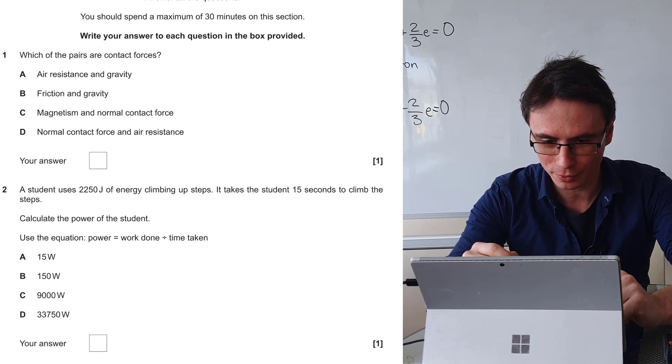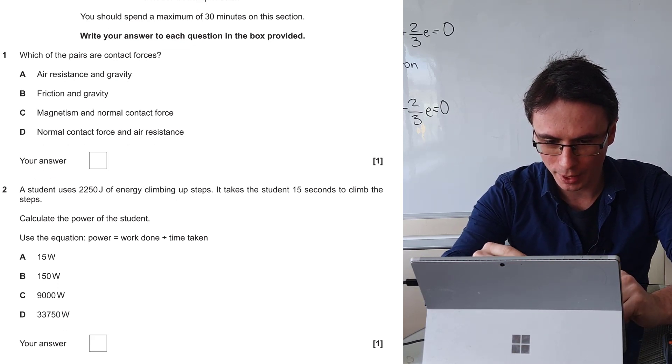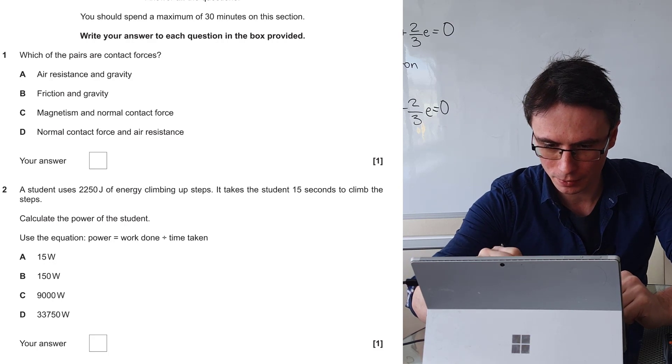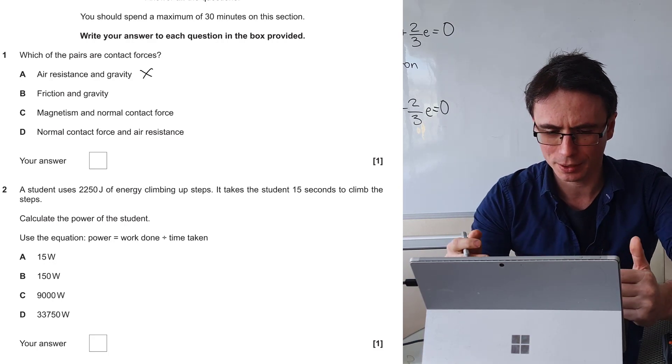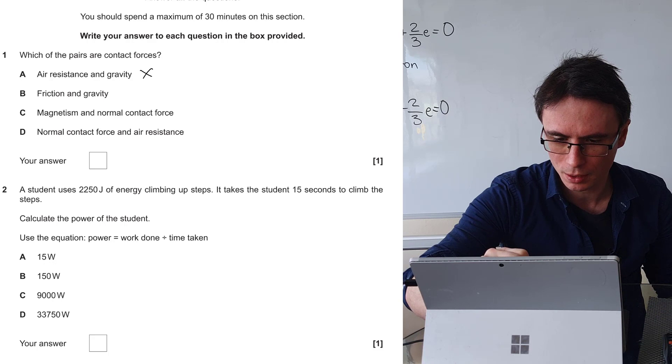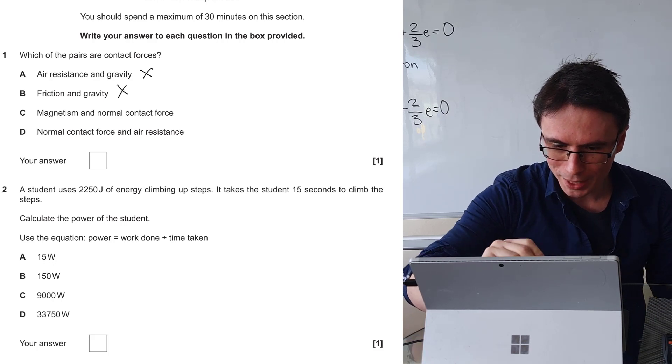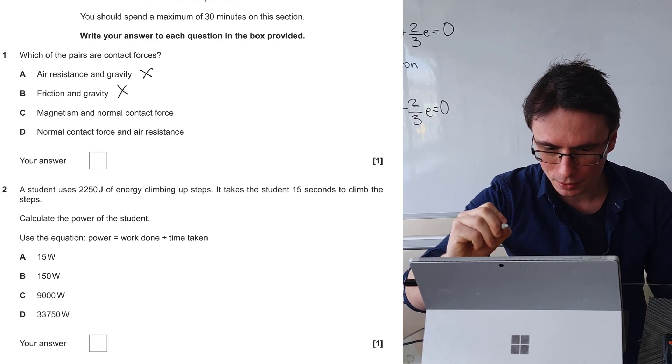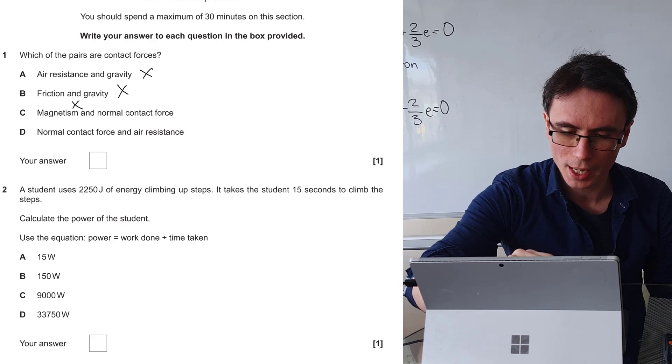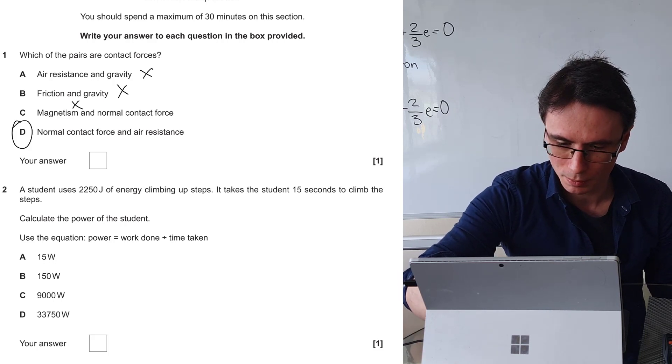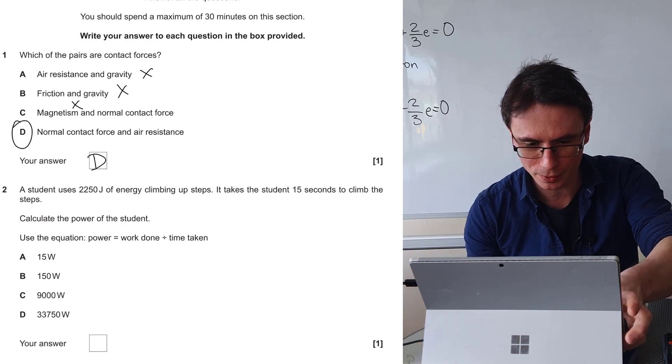Which of the pairs are contact forces? Air resistance and gravity? No, that's not it. Gravity can act at a distance. Friction and gravity? Once again, that's not it. Magnetism can act at a distance. Normal contact force and air resistance, that seems right. So let's put D as the correct answer.